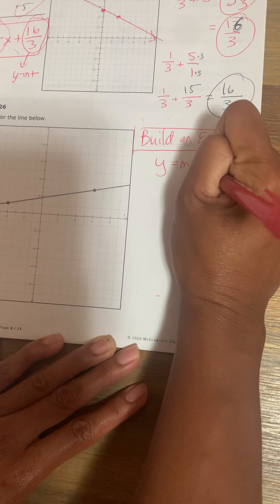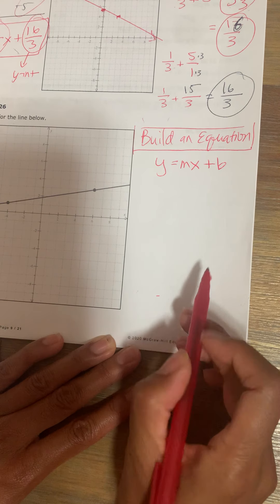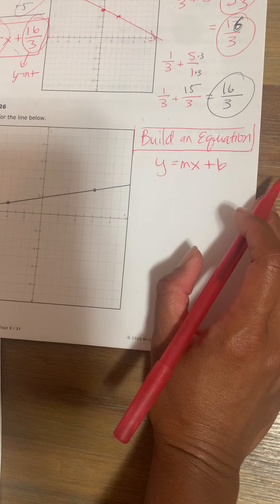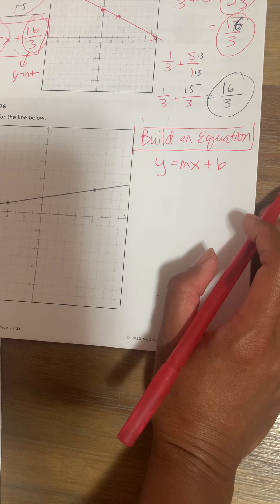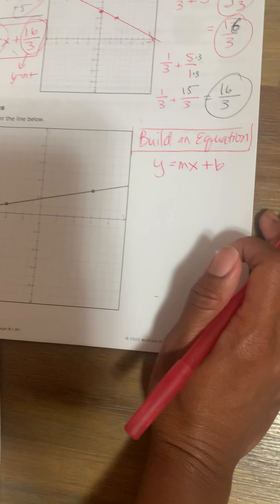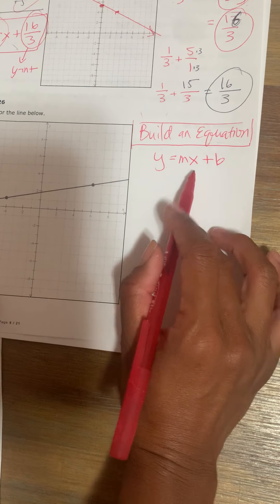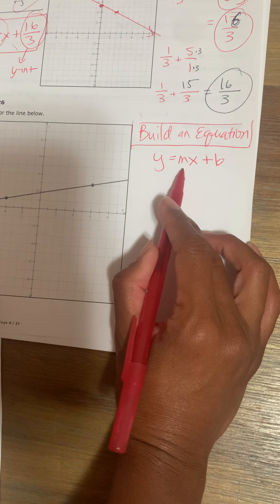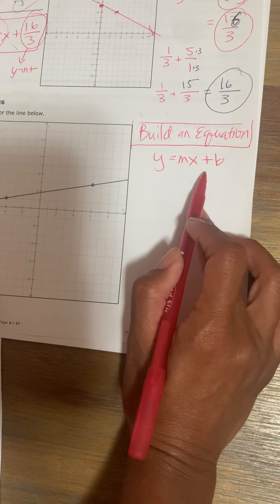There are two formulas to build an equation. You could use this one or the y minus y1 equals m times x minus x1. But just for simplicity's sake, I'm just going to teach one equation which is the slope-intercept form. So you want to build this equation.